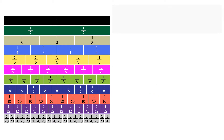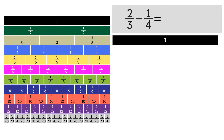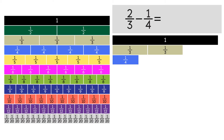Let's do another example: 2 thirds minus 1 fourth. We'll use 1 as the benchmark. Under the 1, we put 2 strips of 1 third to represent 2 thirds. Underneath, we put 1 strip of 1 fourth. The empty space is our difference. To find the like denominator, we need to find the common multiple.